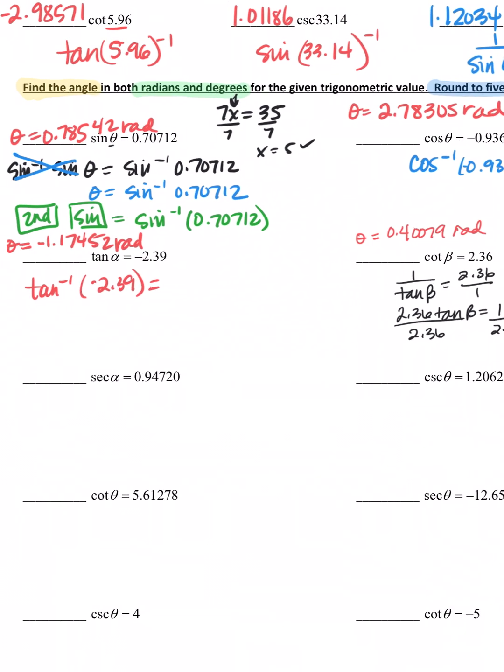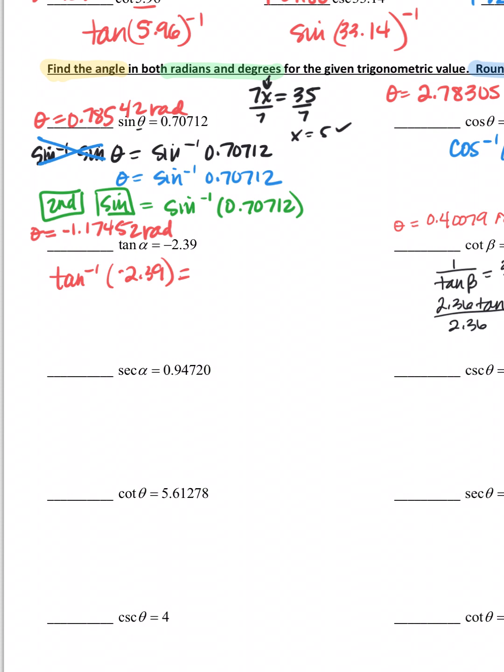Now I do want to show you on this one - secant. Secant of alpha, this is alpha by the way. You can't do secant, it's a reciprocal function of cosine. So what I can do is rewrite it as the cosine of alpha is 1 over 0.94720, very similar to what we just did with tangent.